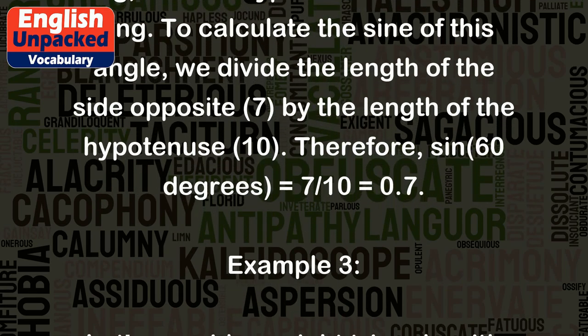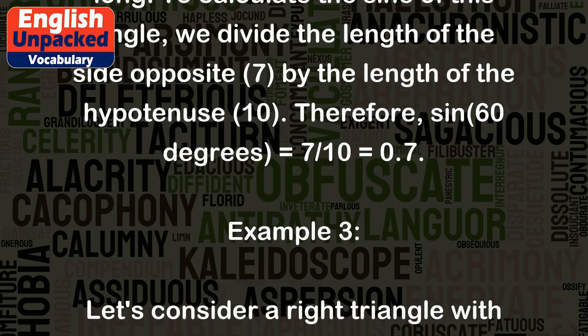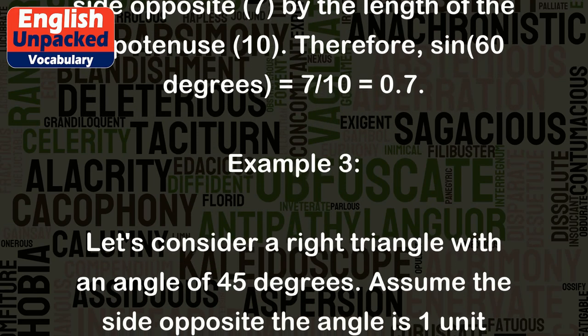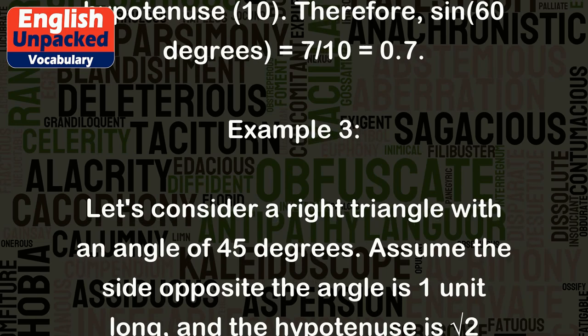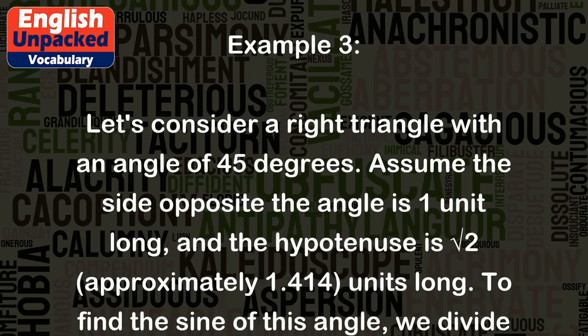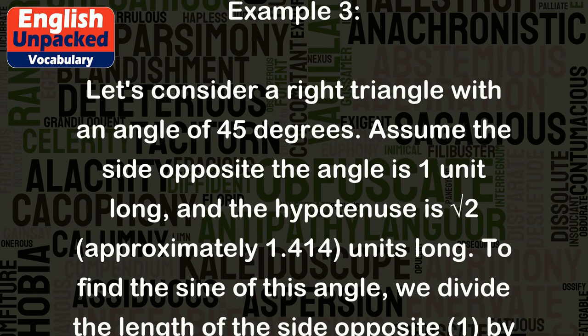Example 3: Let's consider a right triangle with an angle of 45 degrees. Assume the side opposite the angle is 1 unit long, and the hypotenuse is √2, approximately 1.414 units long.